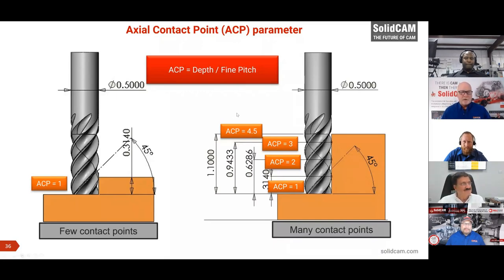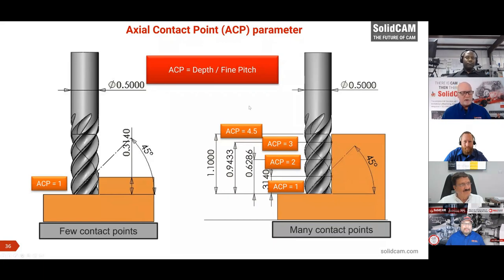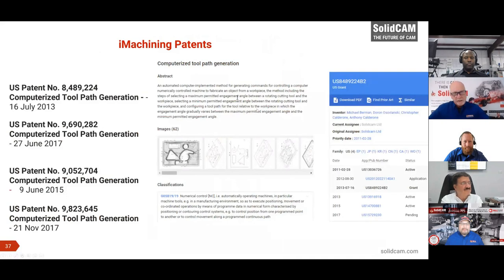SolidCam also monitors axial contact points. When ACP is lower, there's more potential for vibration due to fewer flutes simultaneously engaged. In staircase upsteps, SolidCam increases the cutting angle to help stabilize the tool and reduces feed as necessary to manage chip thickness properly. These are all patented functionalities — SolidCam has seven patents on iMachining. Nobody can touch this technology.